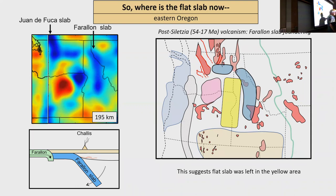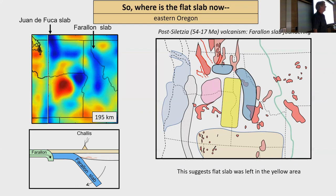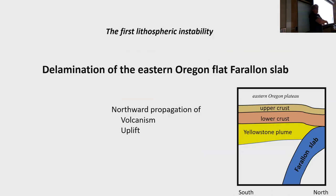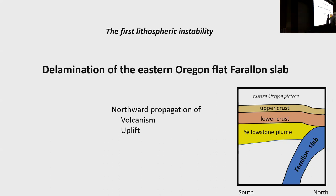There is one area where no volcanism occurred — and to me, that's where the flat slab still was, until 17 million years ago. The story of the CRBs is that this slab is going to come off, peeling from south to north, drawing everything north with it. The delamination is the first lithospheric instability. In cross-section: a slab peels off, its absence and the buoyancy it creates uplift the eastern Oregon area.